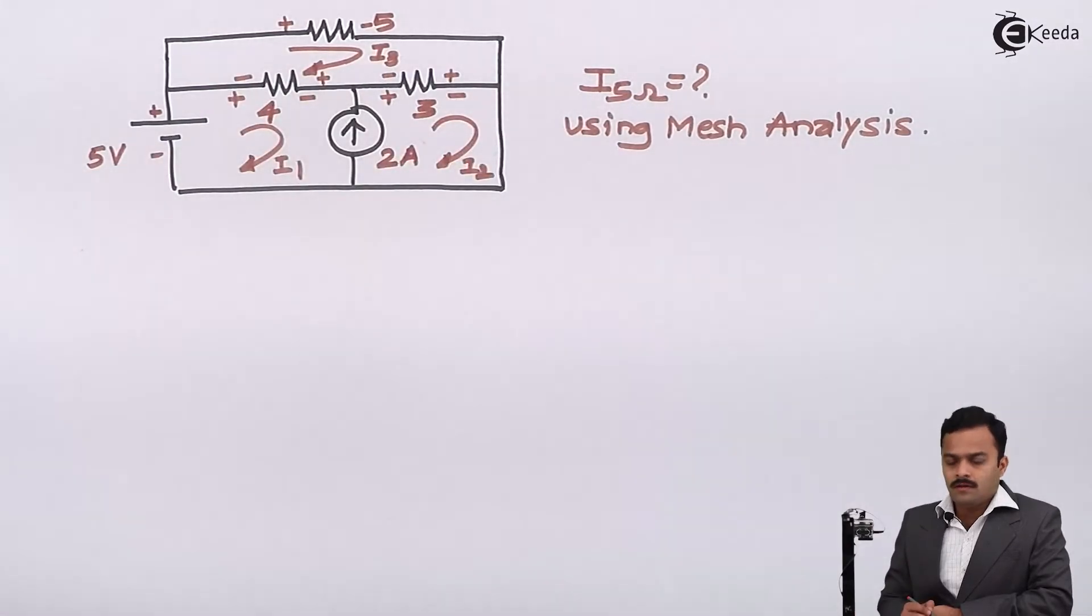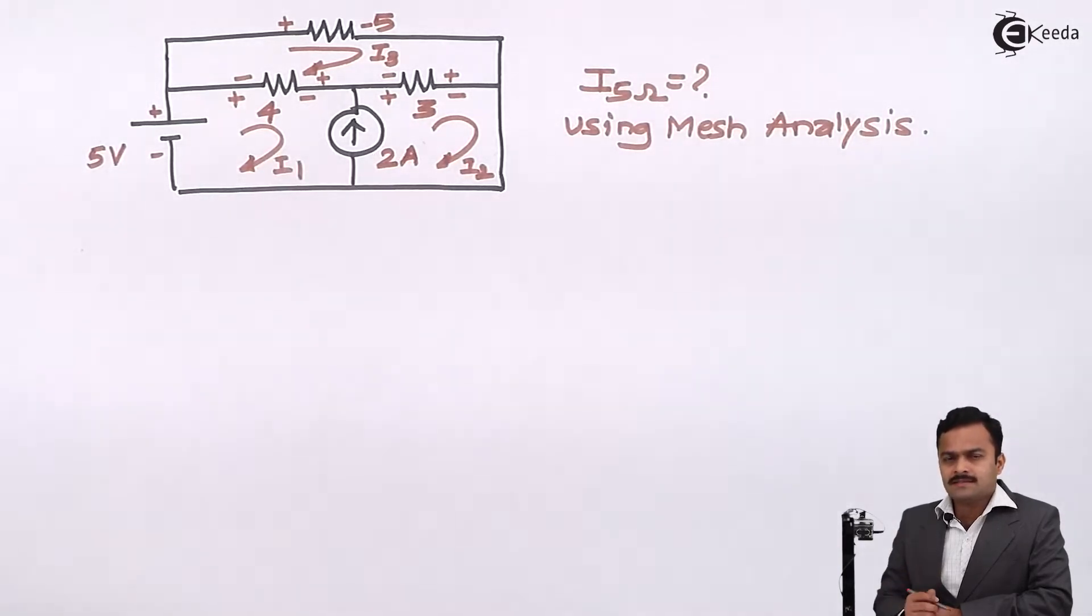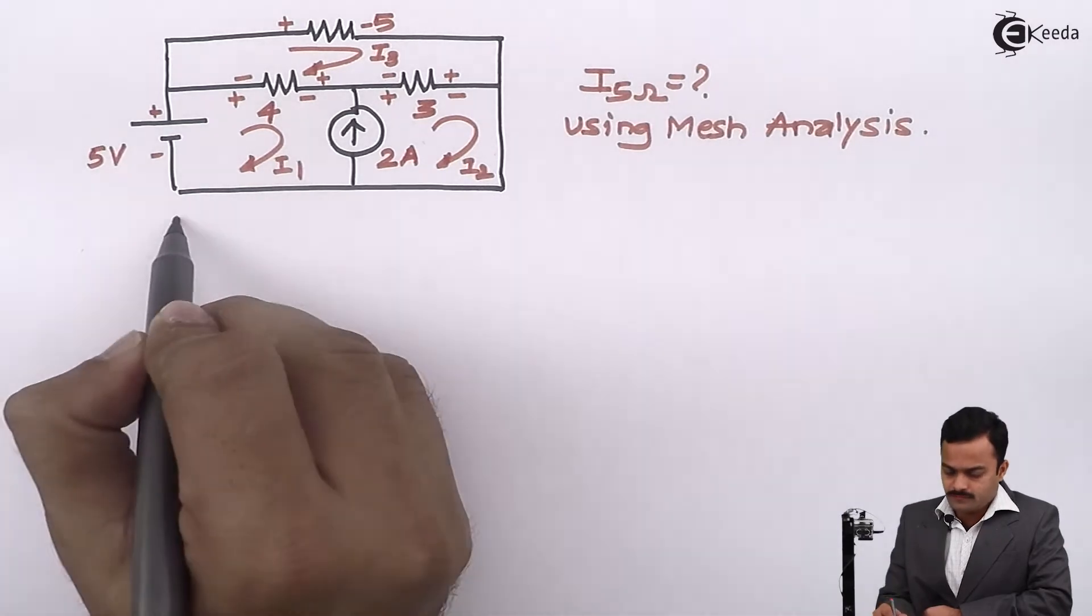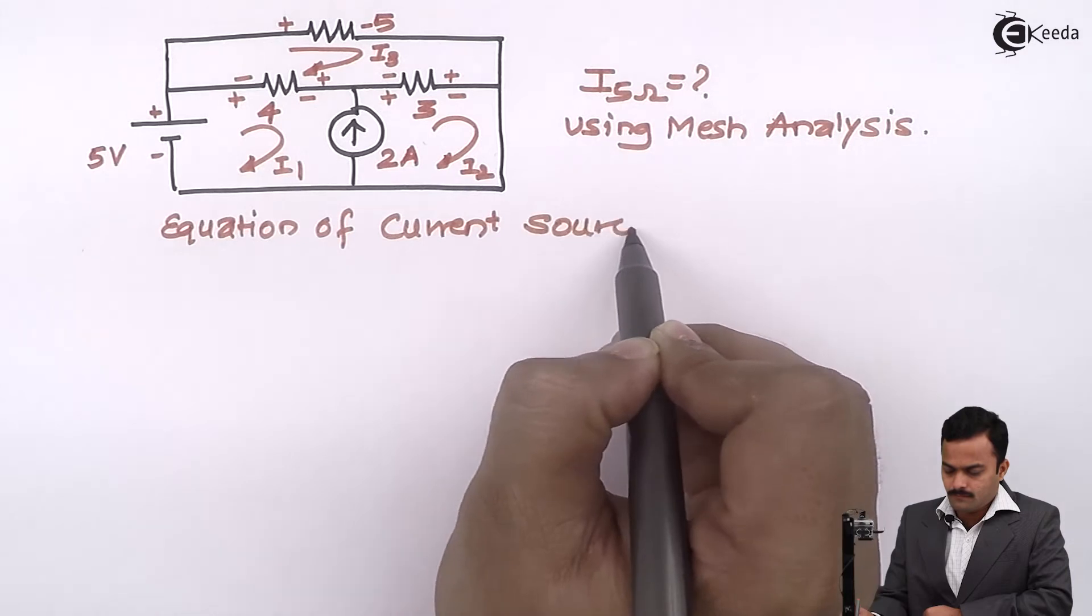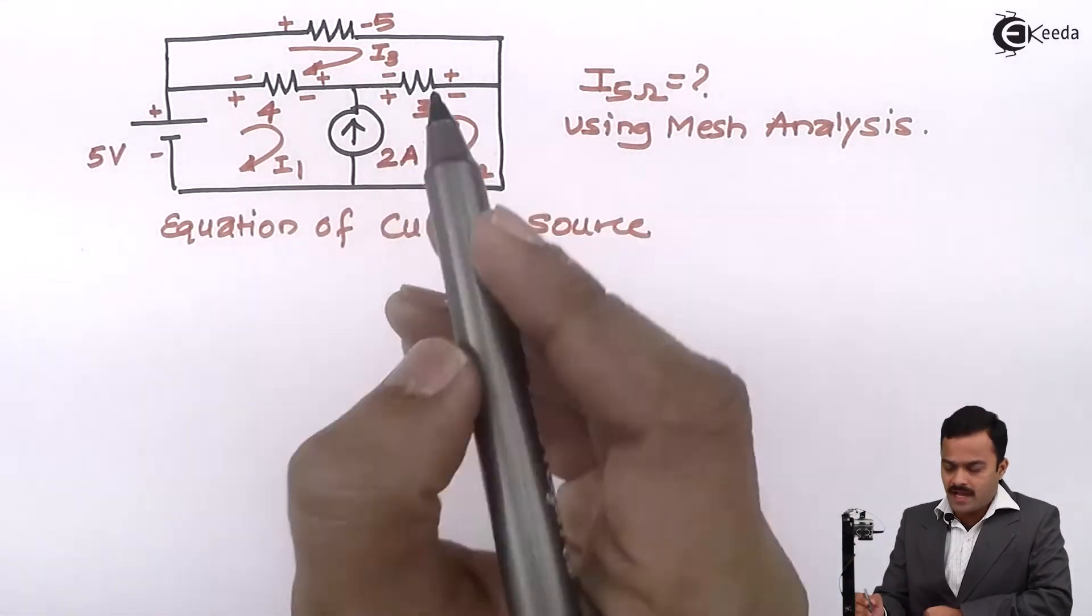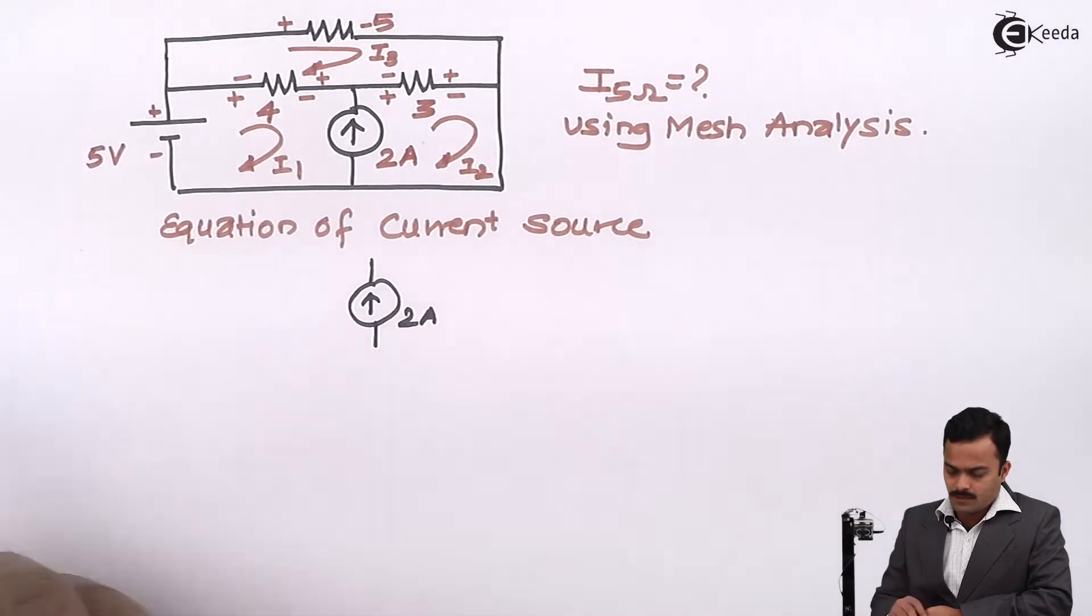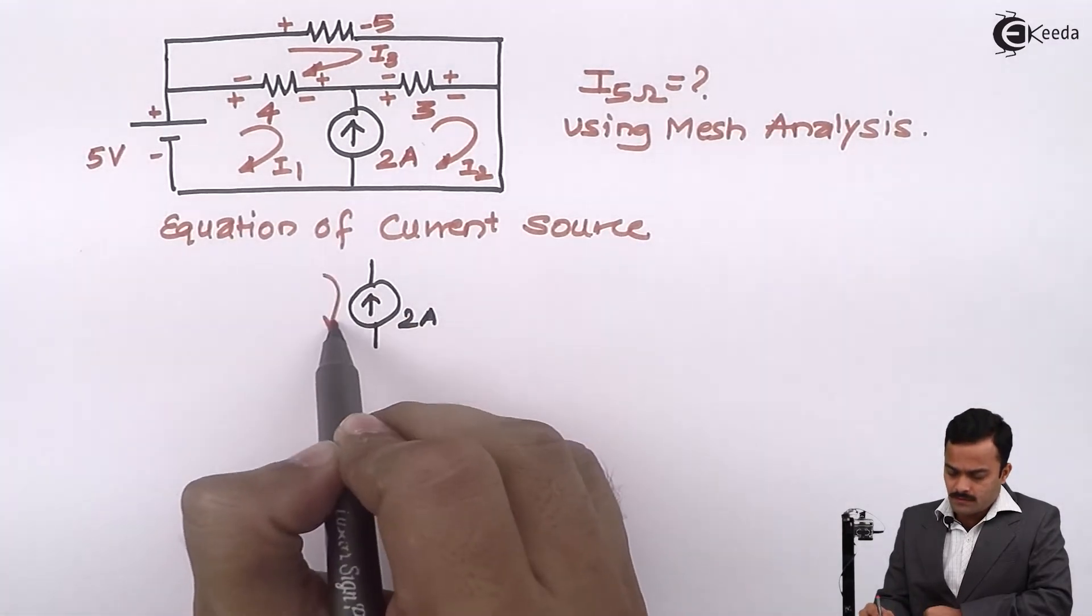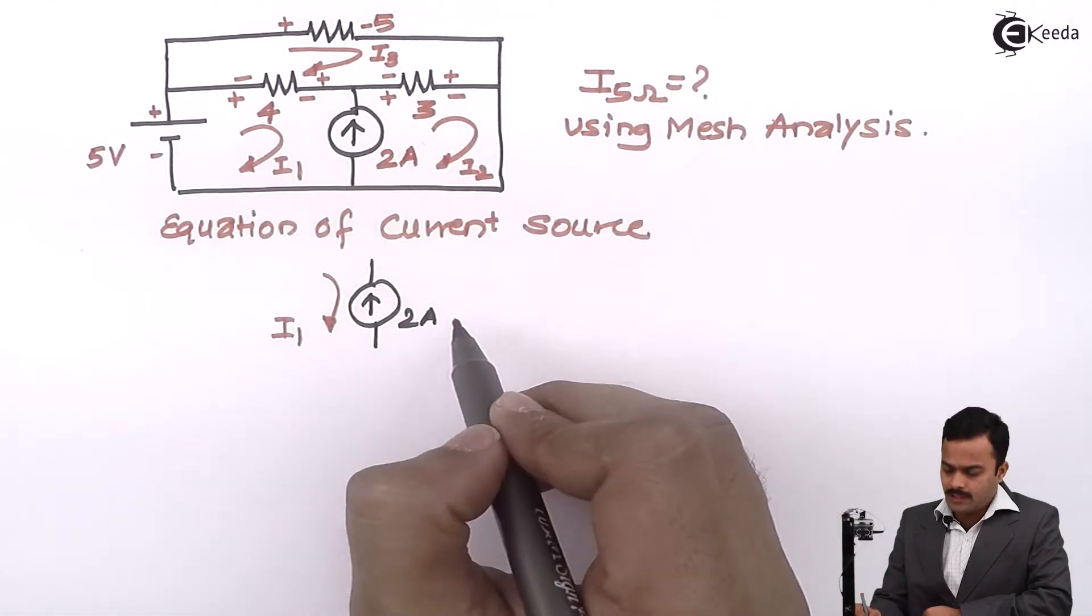Now, there is a current source between 2 loops. So first, let's write the equation of this current source. I will take the current source branch, and for this branch, I1 is flowing downward and I2 is flowing upward.